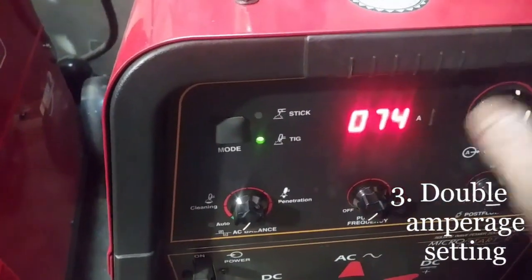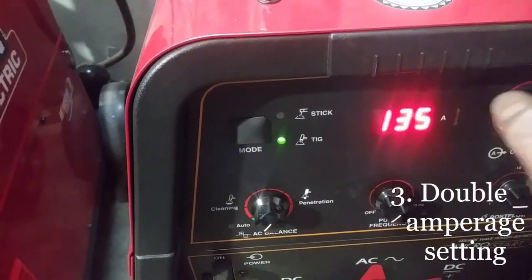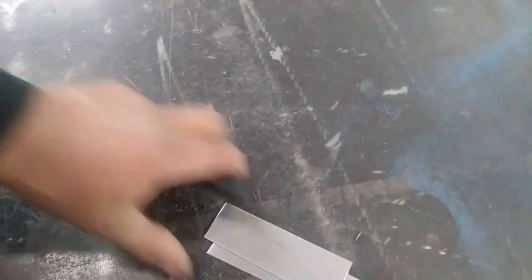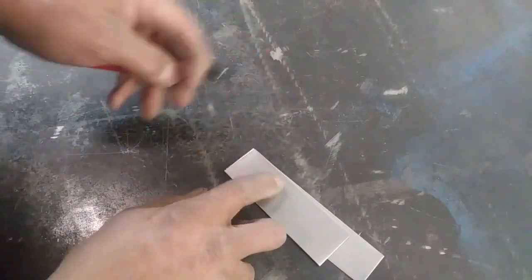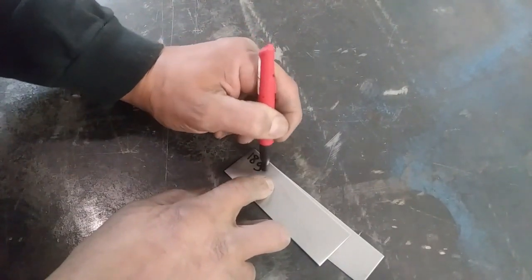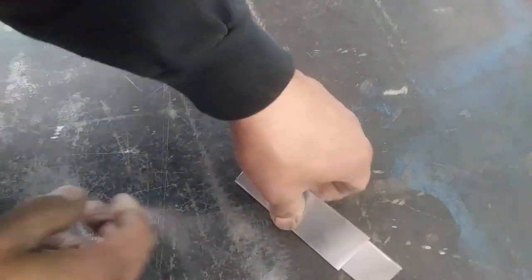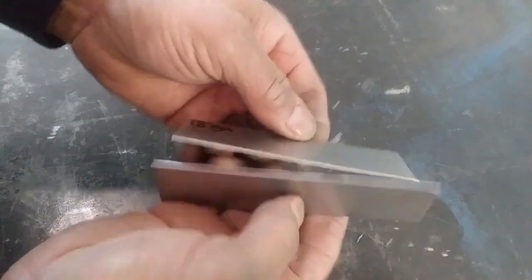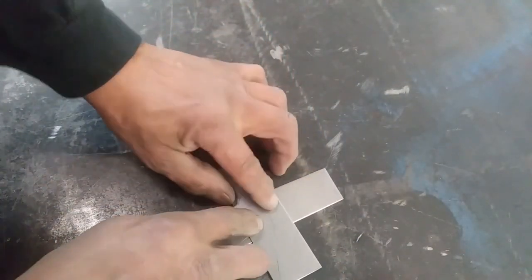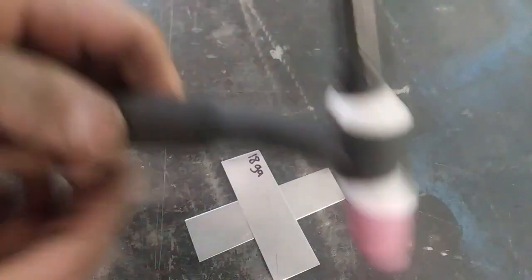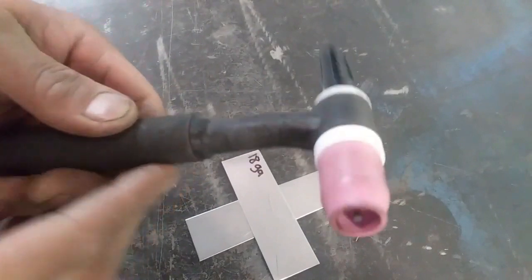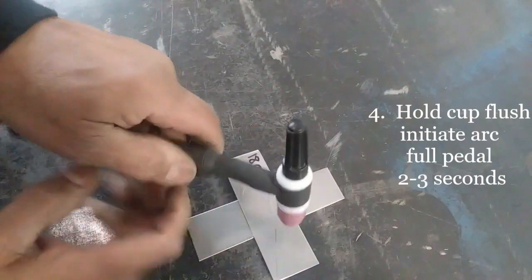And this is the critical step to make this work: whatever the amperage is, double it. Like something like this, I'd run around 70 amps for 18 gauge sheet metal, so we're going to double that. Got a couple coupons, and like I mentioned, we're using 18 gauge sheet metal. We're going to spot weld these two pieces together. Give you a little demo here.